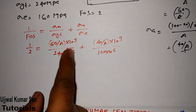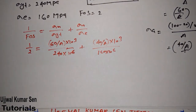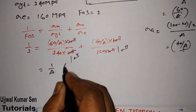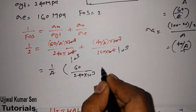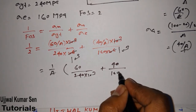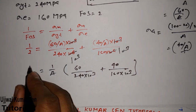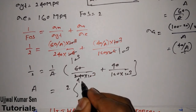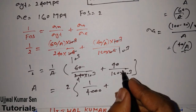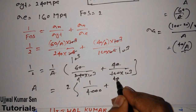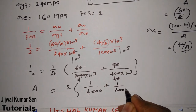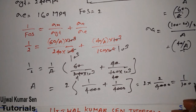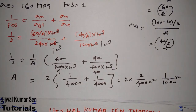Now simplifying the calculation: A moves to the reciprocal side, giving 60/(240×10³) + 40/(160×10³). That gives 1/4000 + 1/4000 = 2/4000 = 1/2000. So 1/2 = A × (1/2000), meaning A = 1/1000 meter square. We don't even need a calculator to solve this.